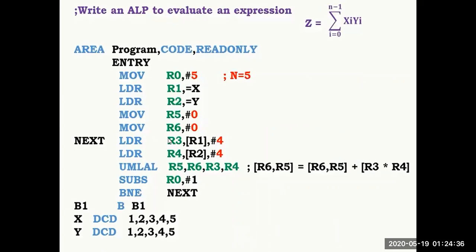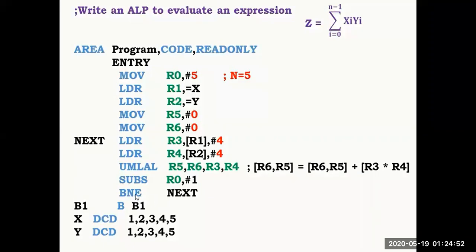After completing all iterations, when R0 becomes 0, the BNE condition is no longer satisfied — the zero flag is affected — so the branch is not taken and execution falls through to the next instruction, terminating the program.